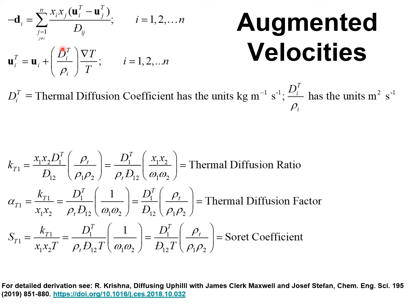This term, d_i^t, is the thermal diffusion coefficient, which has units of kilogram per meter per second. The term d_i^t divided by the mass density of species i has units of square meters per second. The use of augmented velocities follows the treatment in the classic text by Hirschfelder, Curtis, and Bird.